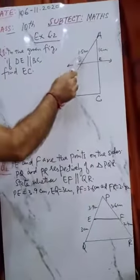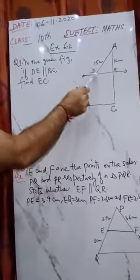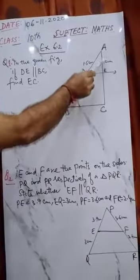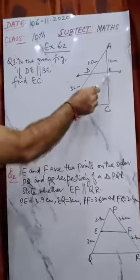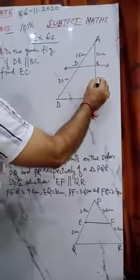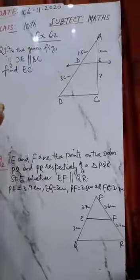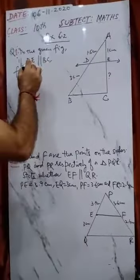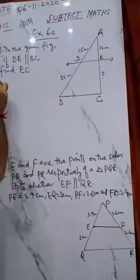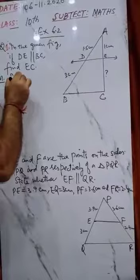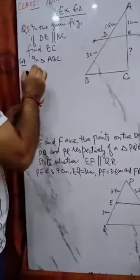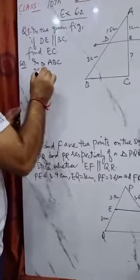AD is 1.5 centimeters, DB is 3 centimeters, AE is 1 centimeter, and we need to find EC. Solution: In triangle ABC, DE is parallel to BC.